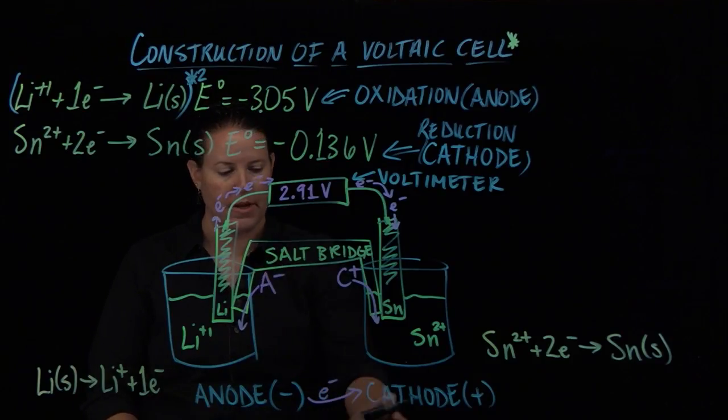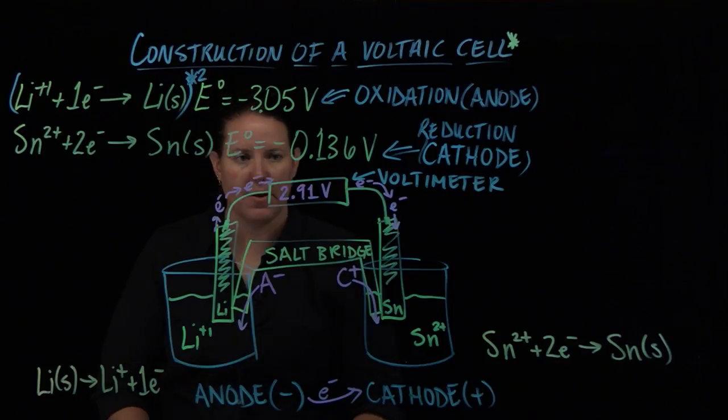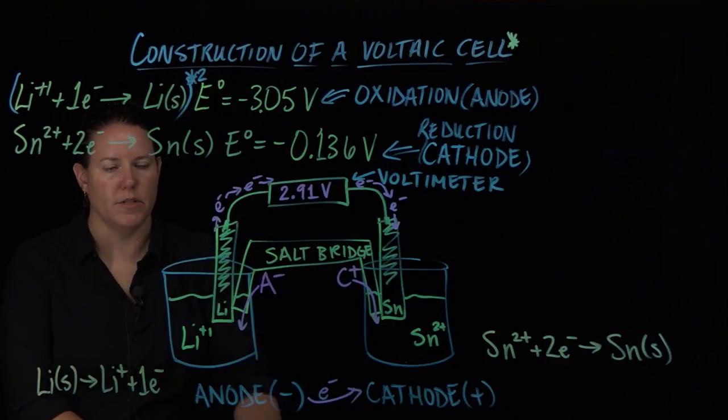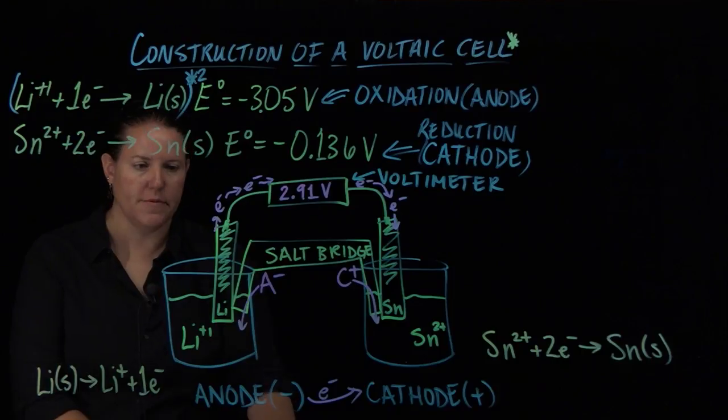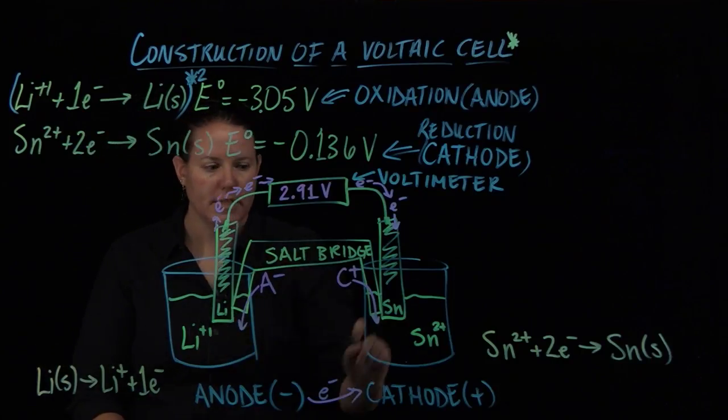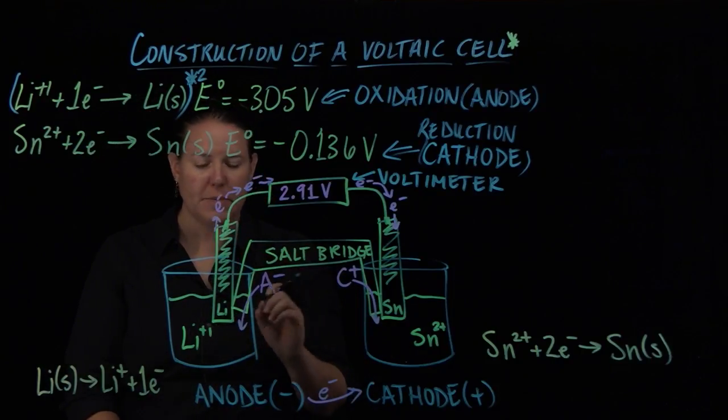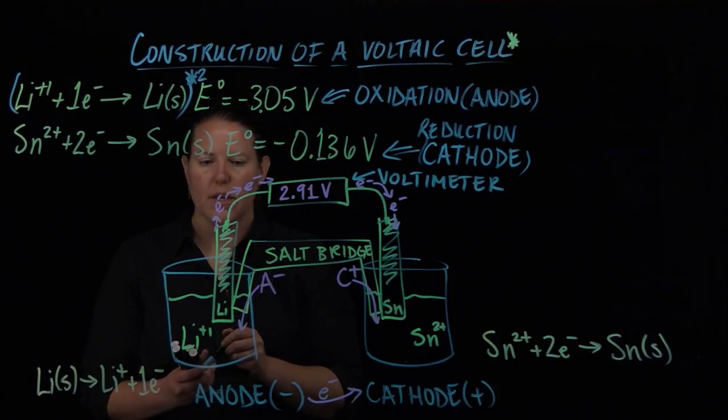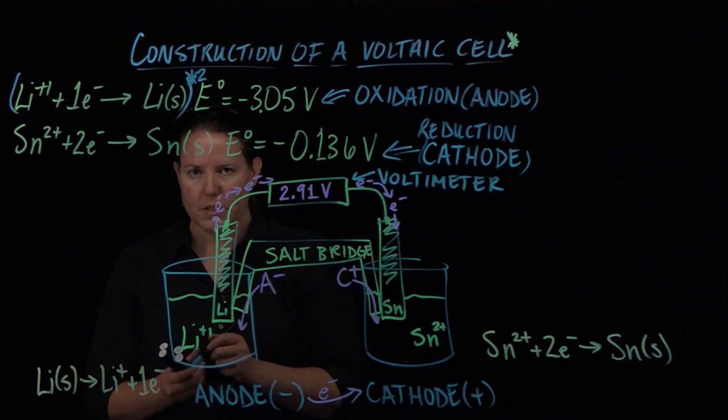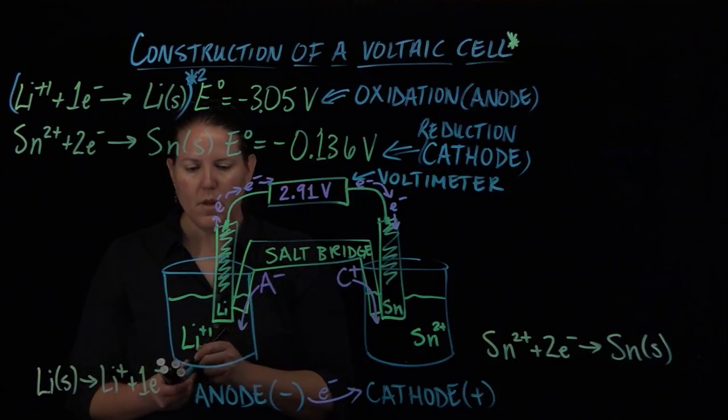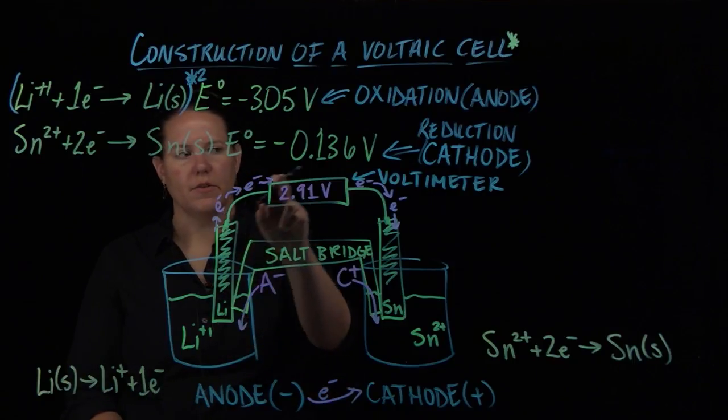Now that we have that, the last piece that we would want to make sure that we have: the anode is the minus part of the battery, cathode is the plus part of the battery. We have the salt bridge, we've designated the voltmeter, we've talked about the electron transfer, we've talked about what exists on either side.